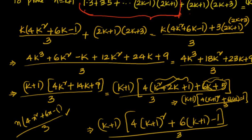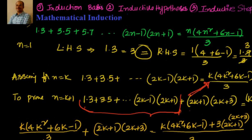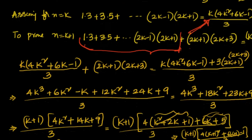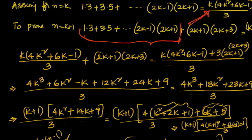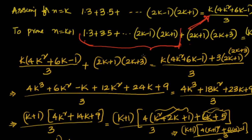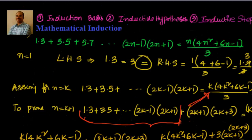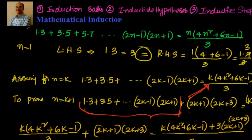This completes the proof for any value of n belonging to the natural numbers. We proved it true for n=1, assumed it for n=k, then proved it for n=k+1 by substituting the inductive hypothesis and adding the (k+1)th term. We'll solve more problems on mathematical induction in the next video. Thanks for visiting. Bye for now.